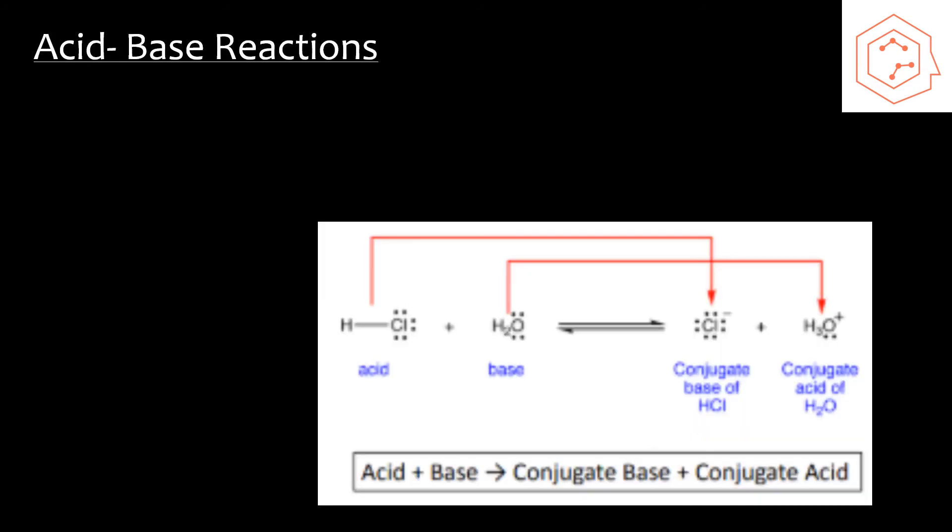When acids and bases react, they tend to form conjugate pairs. Conjugate pairs are based on the gaining or loss of protons between two compounds in their reaction. The acid will lose a proton, so that'll become the conjugate base.